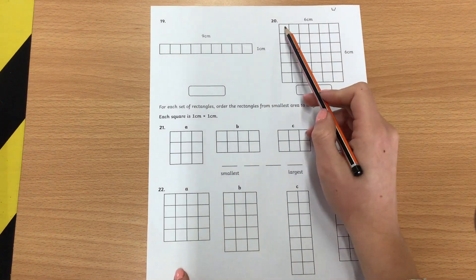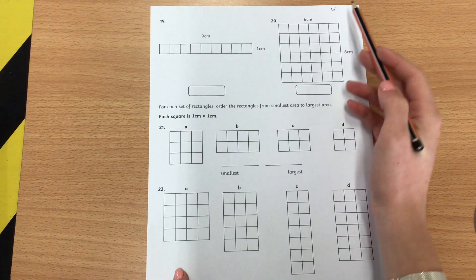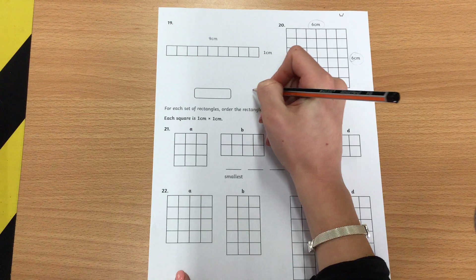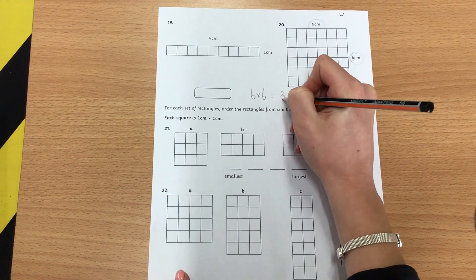So what I mean by this is instead of counting all of these squares, because there's a lot of squares for me to count, I can do my length multiplied by my width. So I can do 6 times 6 which gives me 36.